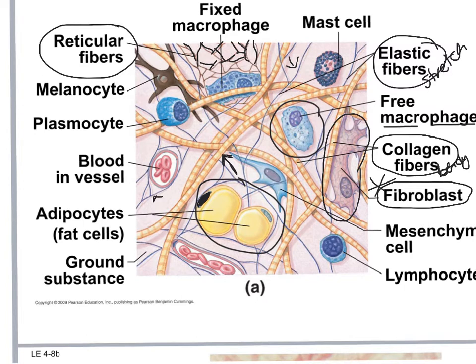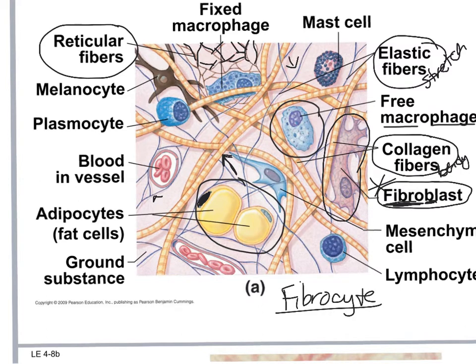Those are the three different types of fibers, and it's the fibroblast that makes them. Then we have the fibrocyte, which is more of a mature fibroblast that helps to maintain the fibers rather than producing new ones.